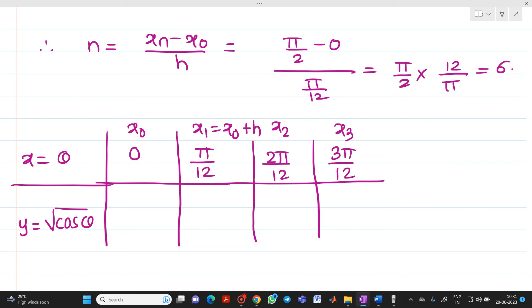Then x₄ will be 4π/12 or you can write it as π/3 also. After that, x₅ will be 4π/12 plus π/12, so you will get it as 5π/12. And here you will get this x₆ as 6π/12 which is equal to π/2.